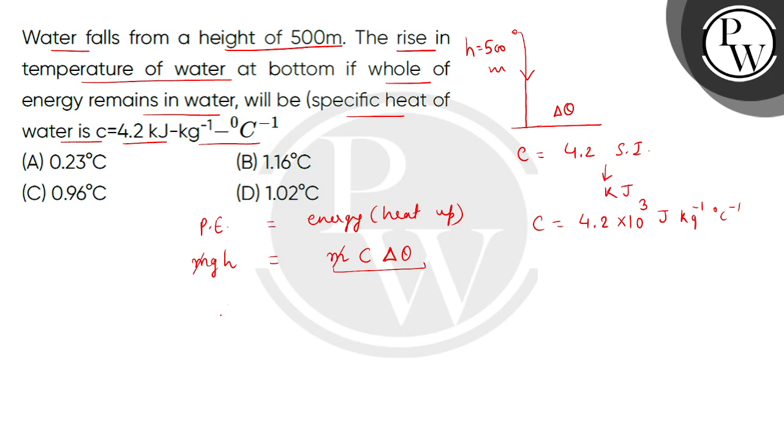M will cancel out, so we will get del theta equals to GH divided by C. Putting the values, G the value of acceleration due to gravity is 9.8, H is 500, divided by 4.2 multiplied by 10 to the power 3.